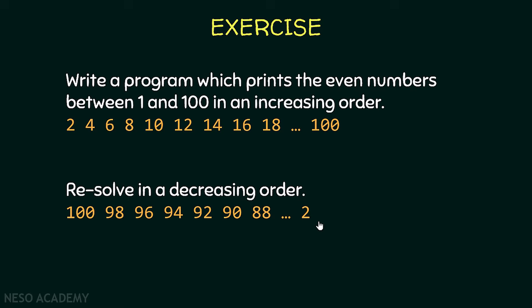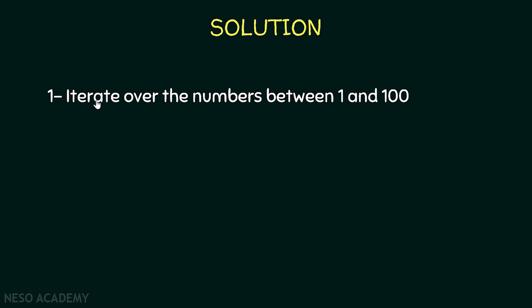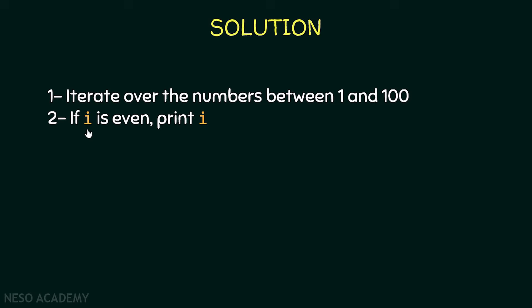Pause the video and try to solve this exercise. To solve it, we want to iterate over the numbers between 1 and 100 — a loop that starts from 1 and ends at 100. Suppose the variable we use inside this loop is called i, so the first time i is equal to 1, then 2, and finally 100. In each iteration we test if i is even.